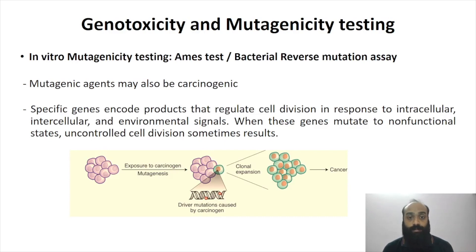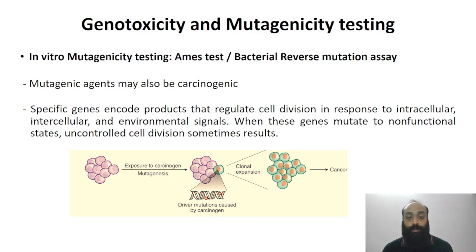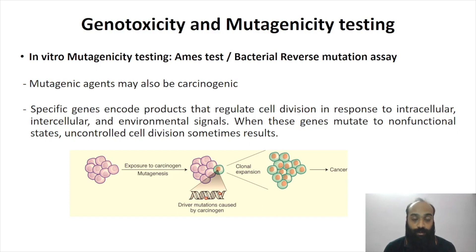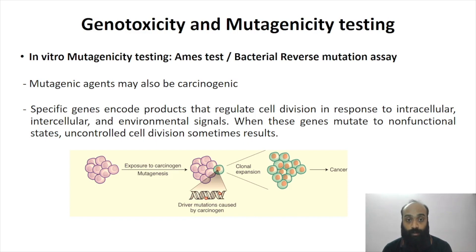The Ames test, or bacterial reverse mutation assay, uses certain strains of bacteria to test the potential mutagenicity and therefore the carcinogenicity of certain substances. Genotoxicity leads to mutagenicity, and mutagenicity can lead to carcinogenicity, but these terms should not be mixed with each other. Mutagenic agents may be carcinogenic, but it is not necessarily the case that mutations will always progress into cancer.